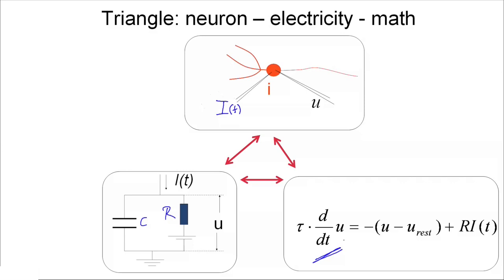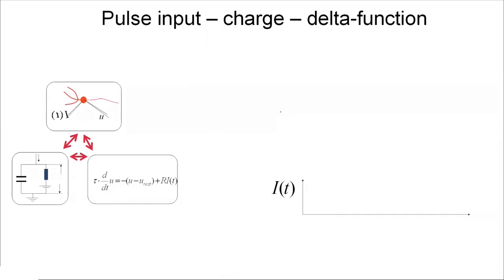In this first class, I talked about the passive membrane and we went around the triangle for the case of the passive membrane. But in other lectures over the next weeks, we will consider more complicated models of a neuron, which leads to more complicated circuits and slightly more complicated differential equations. If we want to understand the properties of a neuron, we can use arguments from electricity and from math.